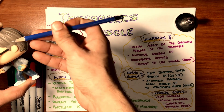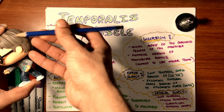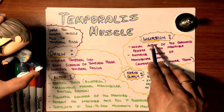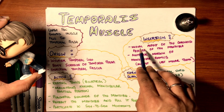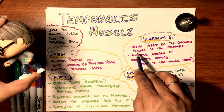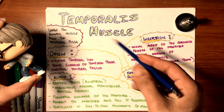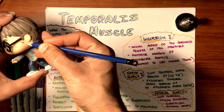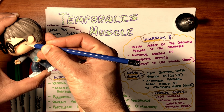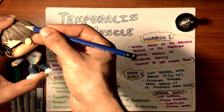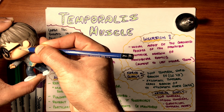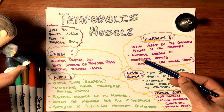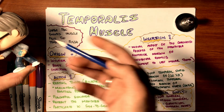The insertion of temporalis is on the medial aspect of the coronoid process of the mandible. We know there is a condyle and a coronoid — it attaches at the coronoid. The fan-shaped muscle attaches there; that is the insertion at the anterior margin of the mandibular ramus.